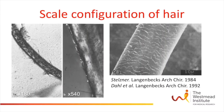In 1984, using light microscopy, Stelzner identified the scale architecture of loose hairs obtained from the pilonidal pits. He suggested that because of this scale structure, movement is only possible in one direction. This scale configuration of hairs in the pilonidal sinus was confirmed using a scanning electron microscope by Dahl et al. in 1992.